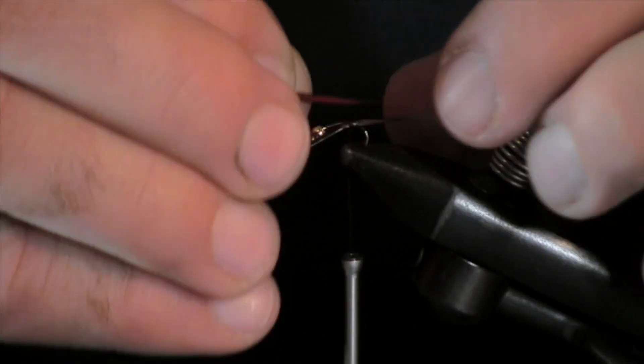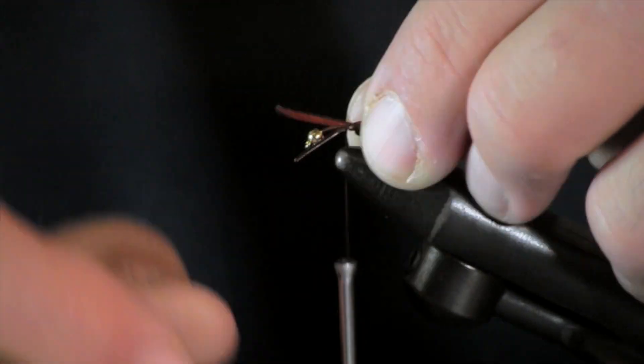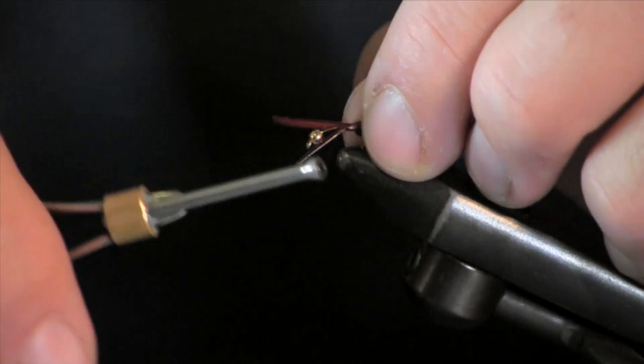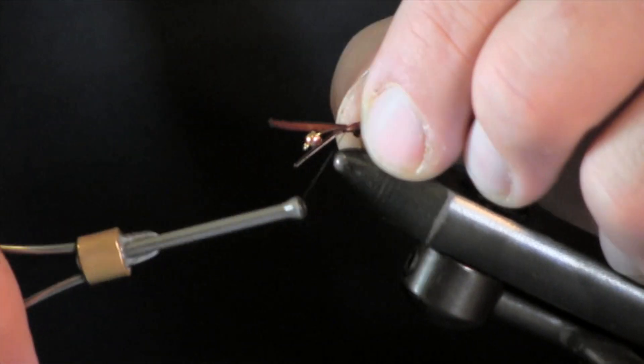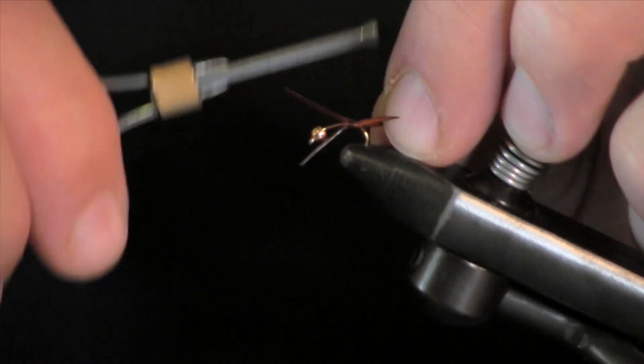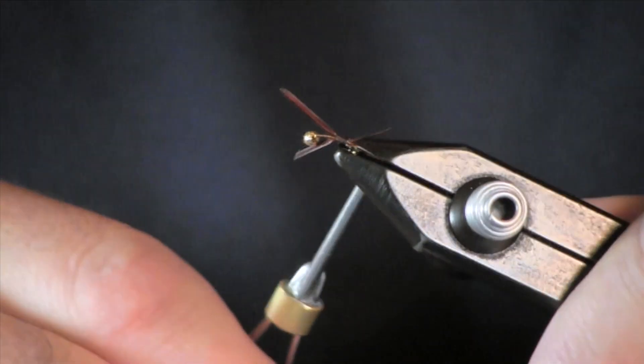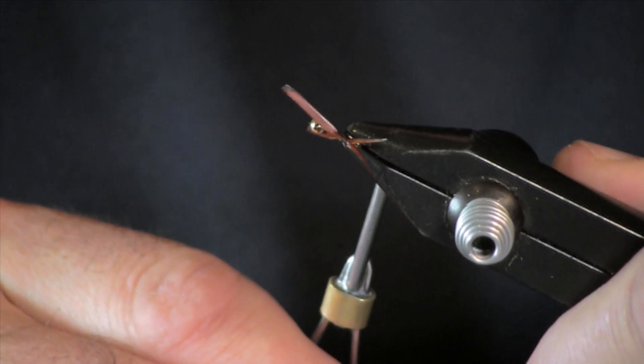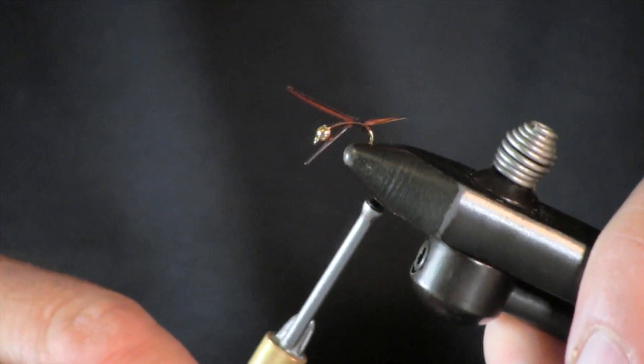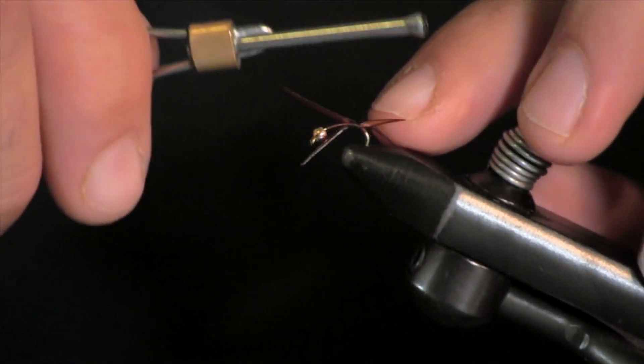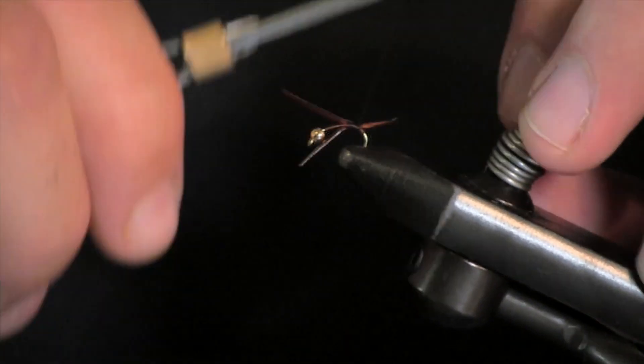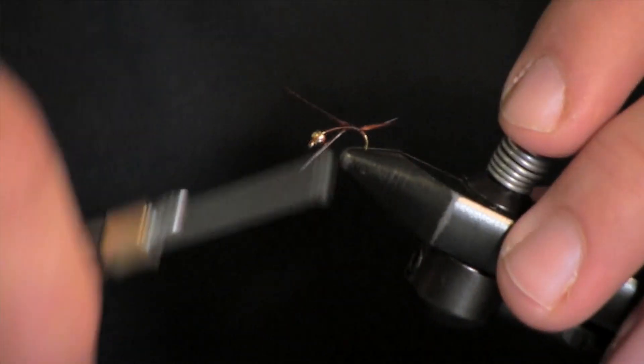By tying that little ball on your line there it is going to help spread your biots apart. As you can see here it spread them out, split them in half, opened it up a little bit, makes it look more like a tail there, the split tail on a lot of your nymphs. Then I am going to cut these off.